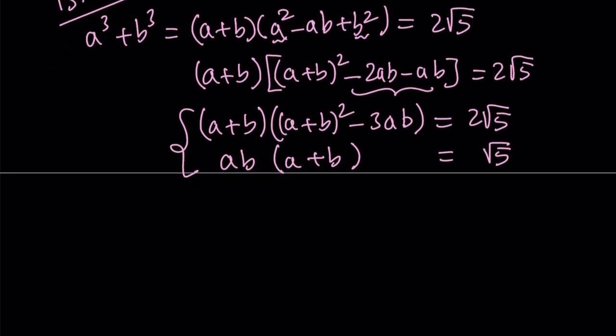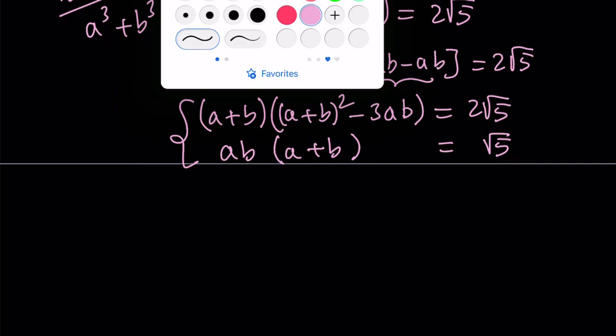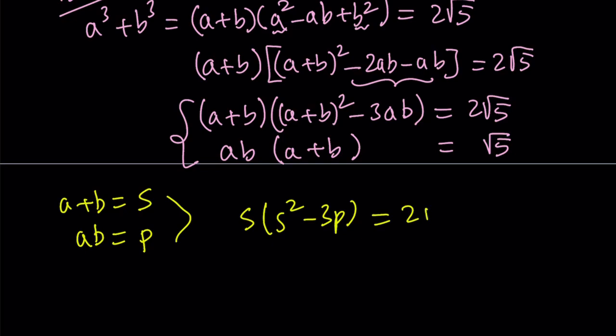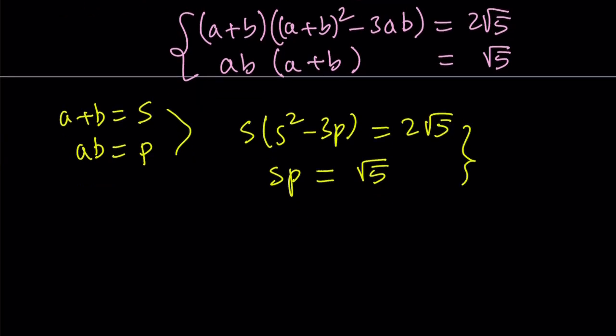First of all, let's do some naming. How about calling a+b as s and ab as p. Then we get s(s² - 3p) = 2√5 and sp = √5. Here's one thing we can do: we can divide these equations side by side because that's going to help us cancel s.